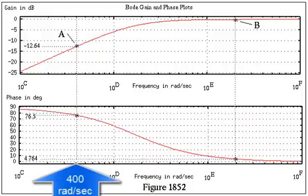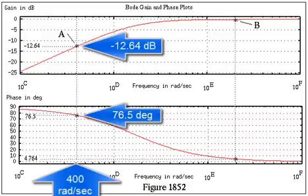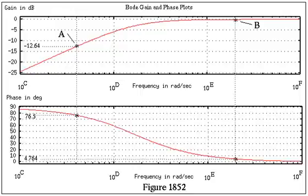That's 400 radians per second. The gain is negative 12.64 dB, and the phase is 76.5 degrees. D equals 3.